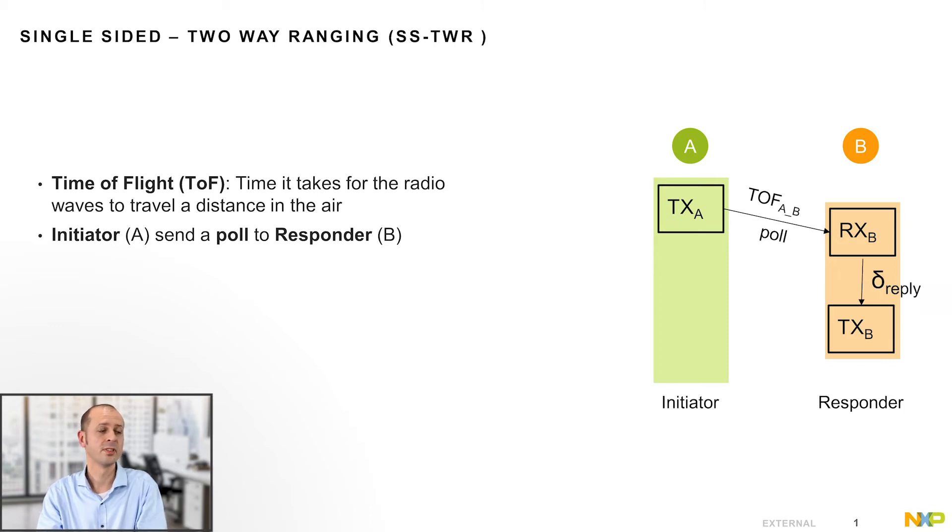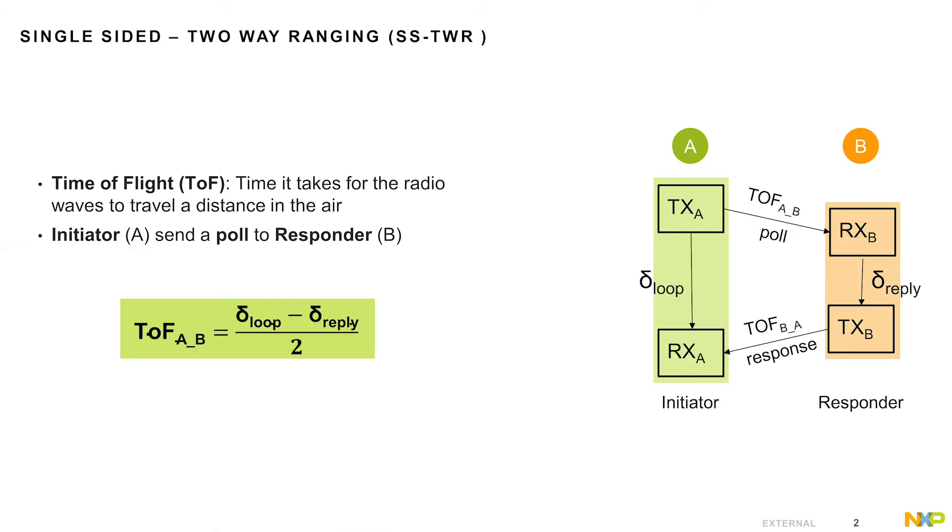The delay of the processing in the responder between the reception of this poll and the transmission of the response is added to the response message. The time needed for the return message to reach A again is the same time of flight as before. The initiator knows the delay between sending the poll and receiving the response and can calculate the time of flight and hence the distance.